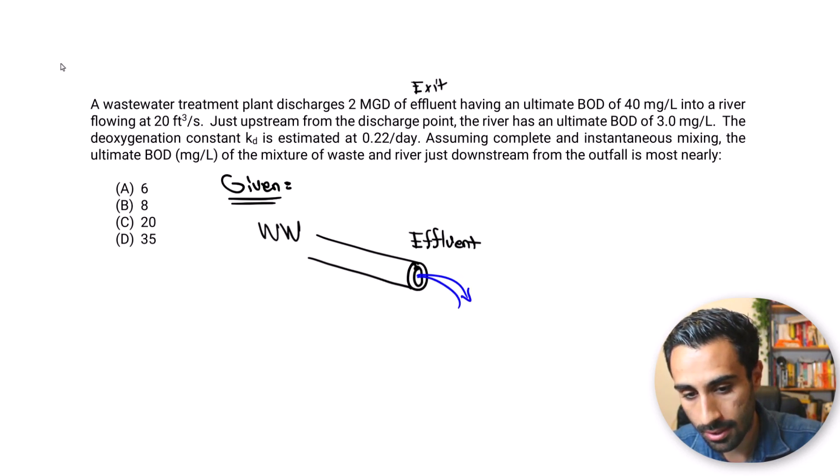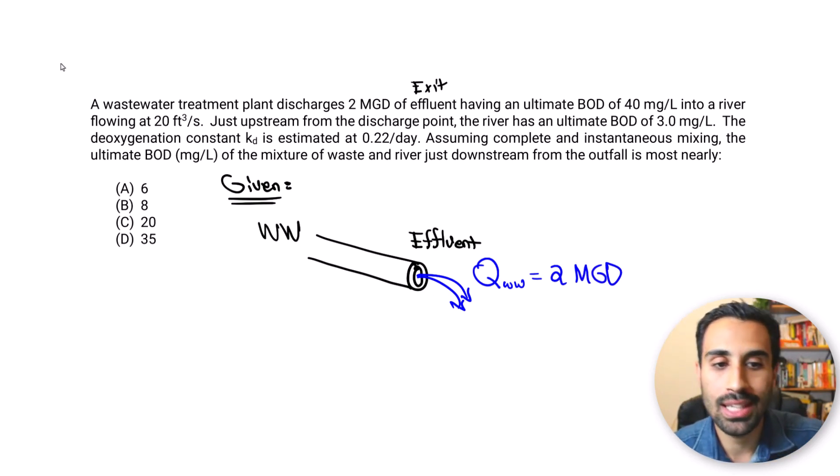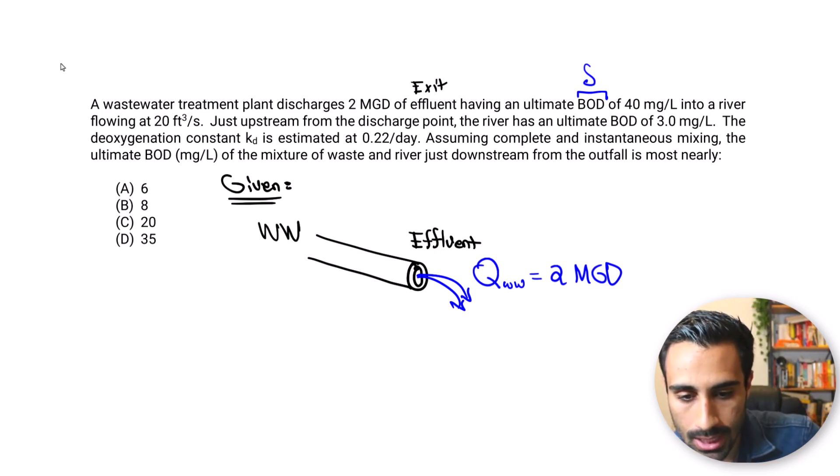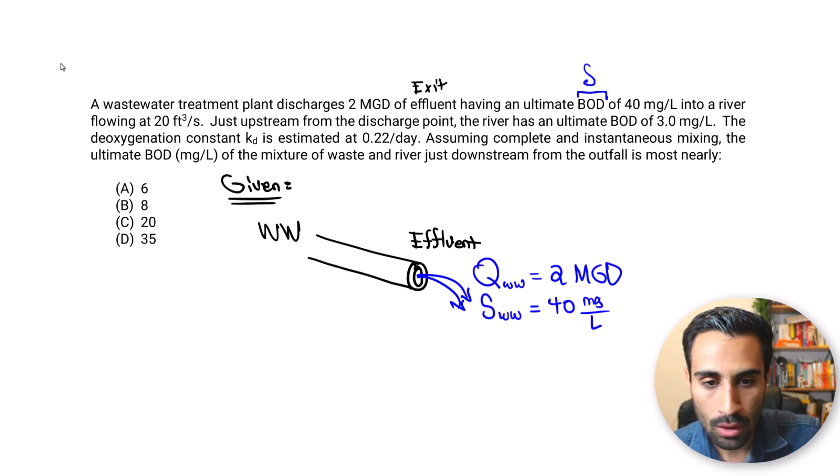Let me label that as effluent and show some water coming out of here. That would be the 2 MGD from the wastewater, the effluent. So that's going to be a Q value because it's a flow commonly used in water and wastewater treatment. So we know Q for wastewater is going to be 2 MGD. What else do we have? We have the ultimate BOD. That ultimate BOD is going to be the S value. So S means BOD, that's from the FE handbook. So the S of wastewater, the BOD, the biological oxygen demand is 40 mg per liter.